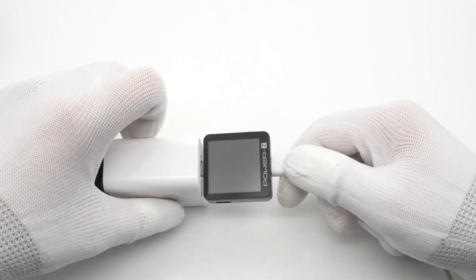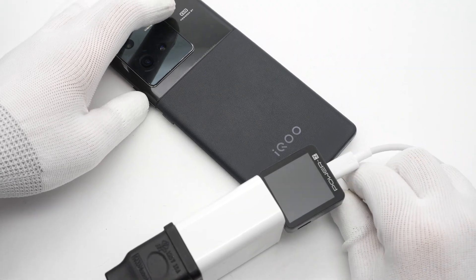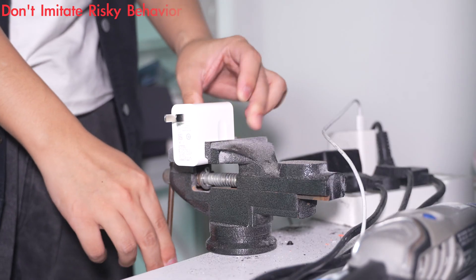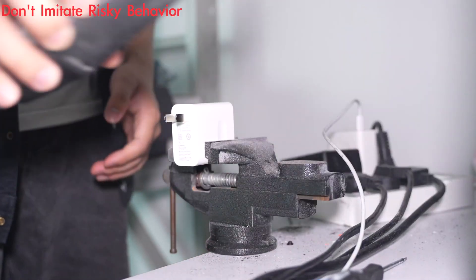Use it to charge the iQOO 10 Pro. The real-time power is about 23W and the protocol is UFCS. Next, let's cut off the plastic case using the cutting machine.